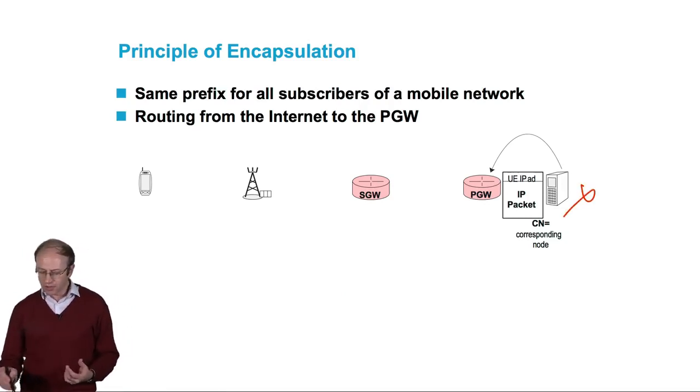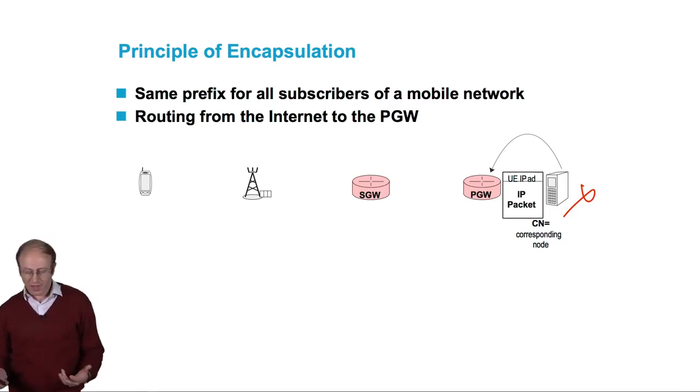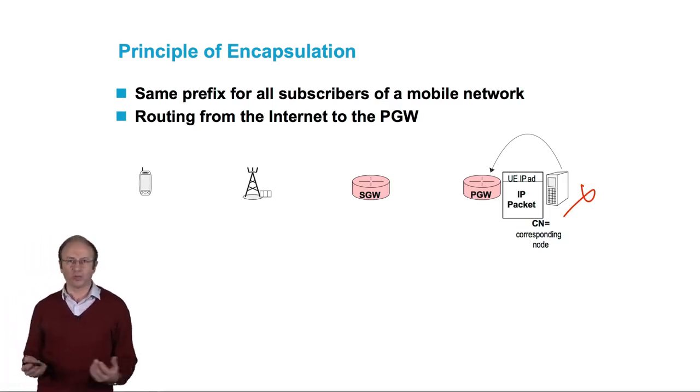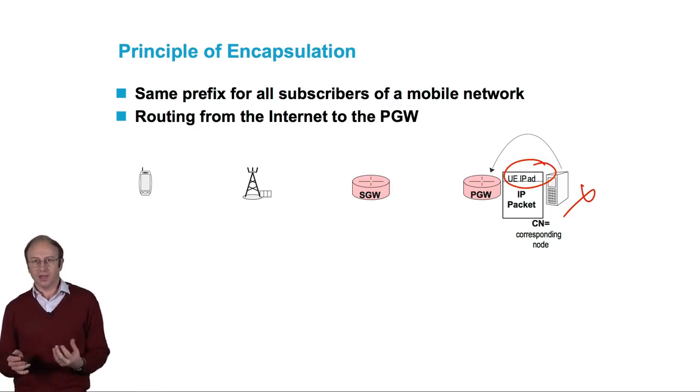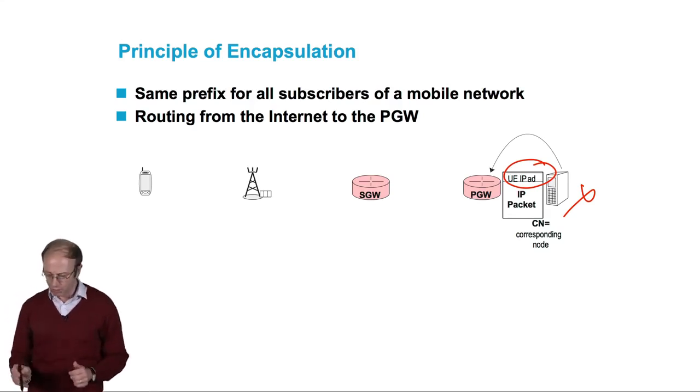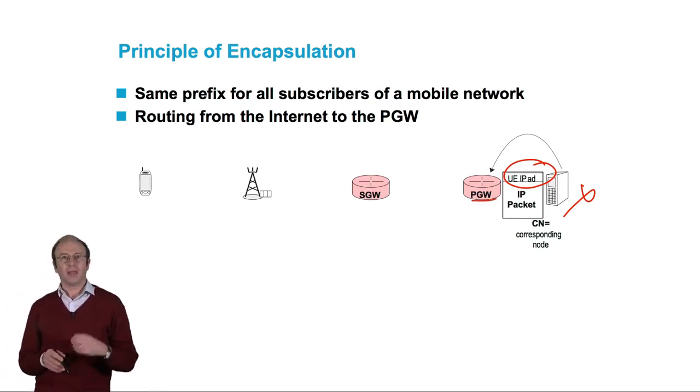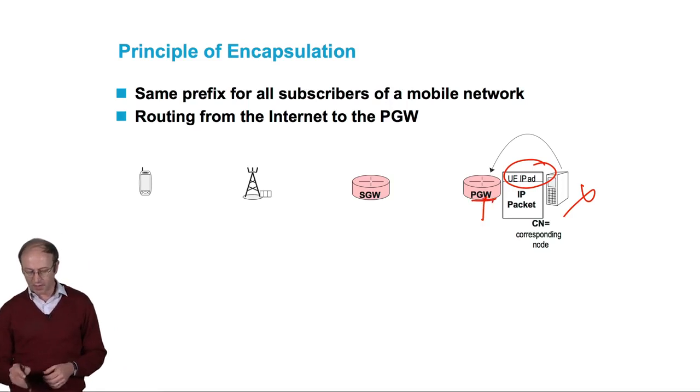So when I consult a server, for instance I watch an excellent video on 4G networks on my smartphone, the packets created by the server contain the destination address of my mobile terminal, that is the UE IP address, which includes a prefix specific to the packet gateway. This IP packet is thus simply routed towards the packet gateway.